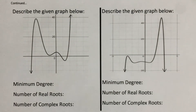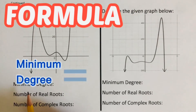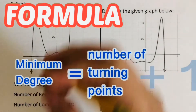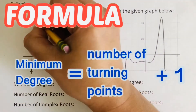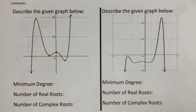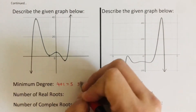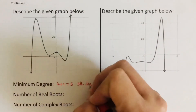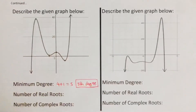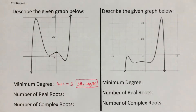Let's determine the minimum degree for this next problem. The minimum degree equals the number of turning points plus one. In this problem we have one, two, three, and four turning points, so four plus one equals five. This polynomial is fifth degree.